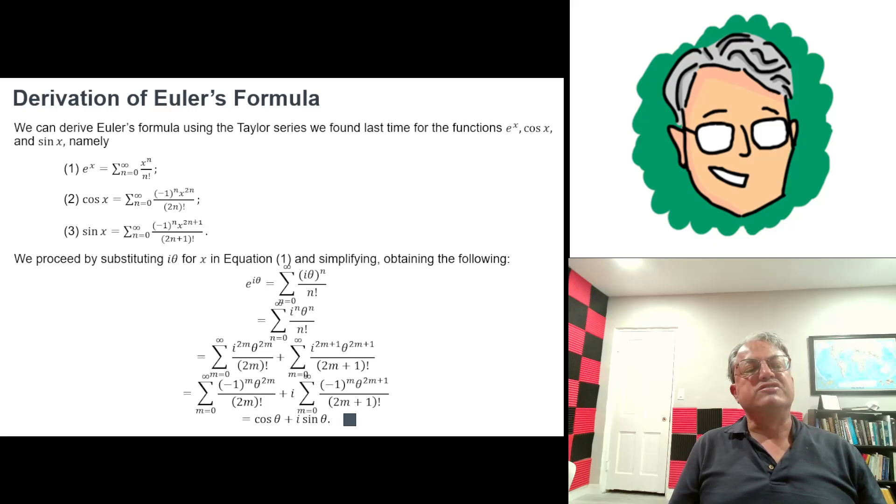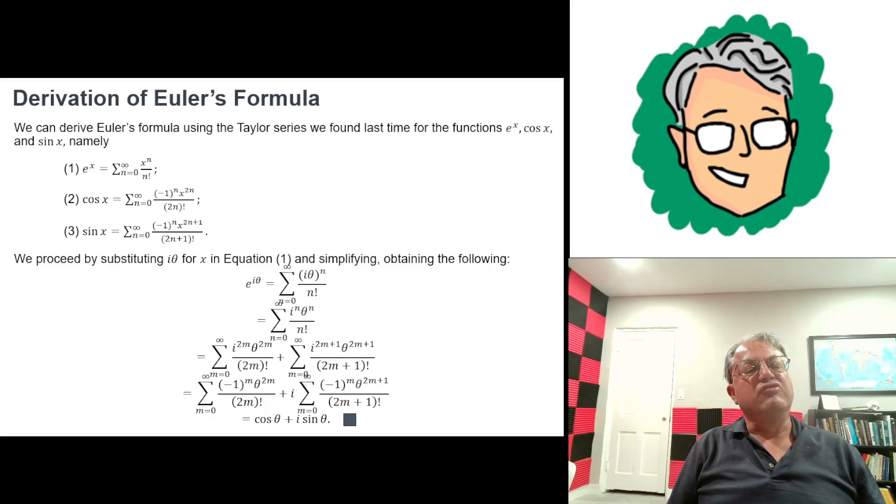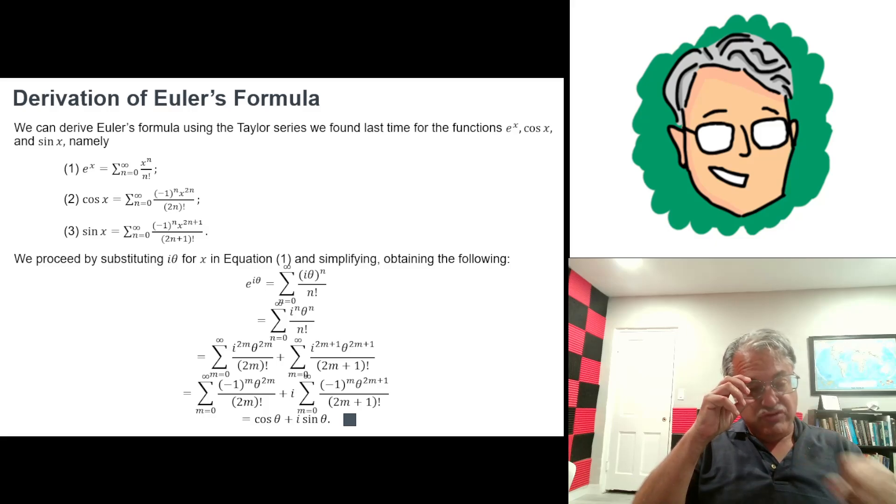We derived e to the x as the sum n going from 0 to infinity of x to the n over n factorial. We derived that using Taylor's theorem. Then we derived the Taylor series for cosine x, which is the sum n goes from 0 to infinity of minus 1 to the n times x to the 2n over 2n factorial, and similarly for sine x.